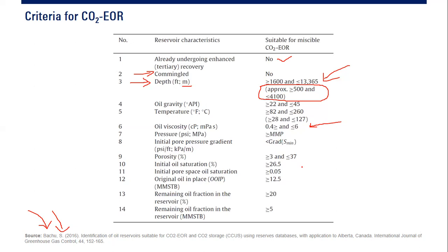The eighth criterion: initial pore pressure gradient should be below the fracture gradient and below the minimum horizontal stress. You do not want to fracture your reservoir, and you do not want to open already-existing fractures. The pressure should remain below the minimum horizontal stress, which will also keep it below fracture pressure.